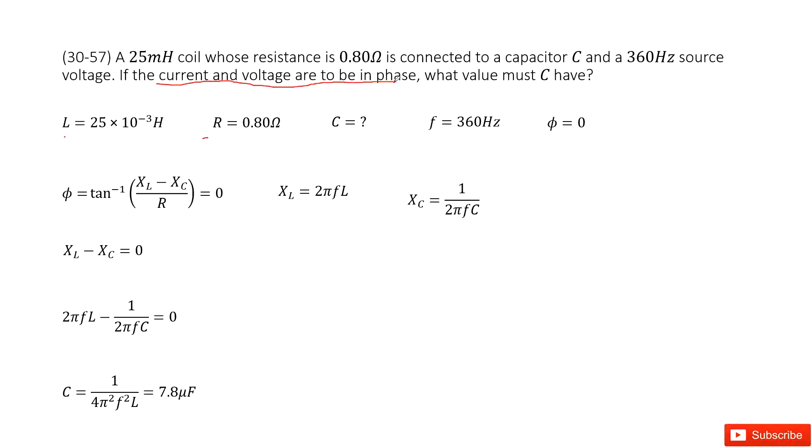So that means there is no phase shift. We can think the phase shift equals zero. What value must C have? The quantities given are R, L, and f, and it asks you to find C.